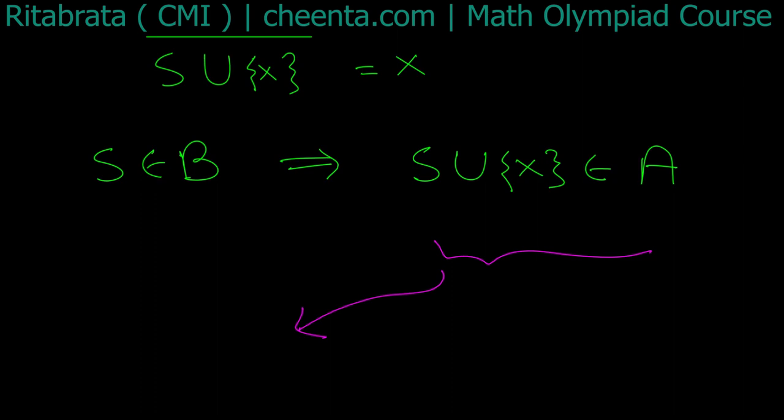To reverse the process: take any element S' in A. We know the average is inside S'. To reverse it, we just remove that average element from S'. This gives us a set with the same average x, but now x is not inside — this should land us in B.